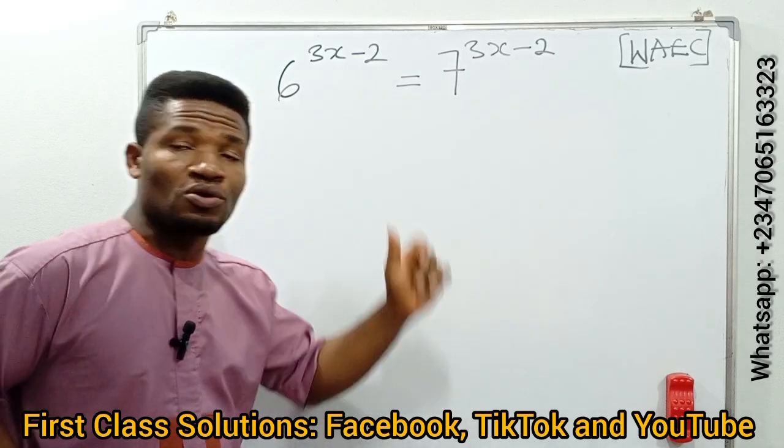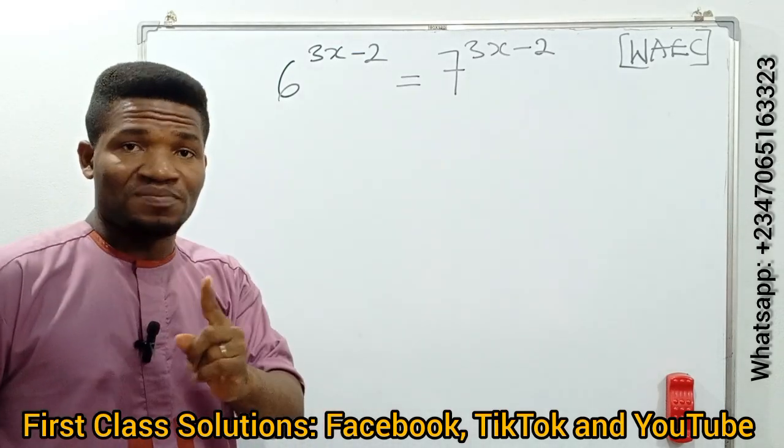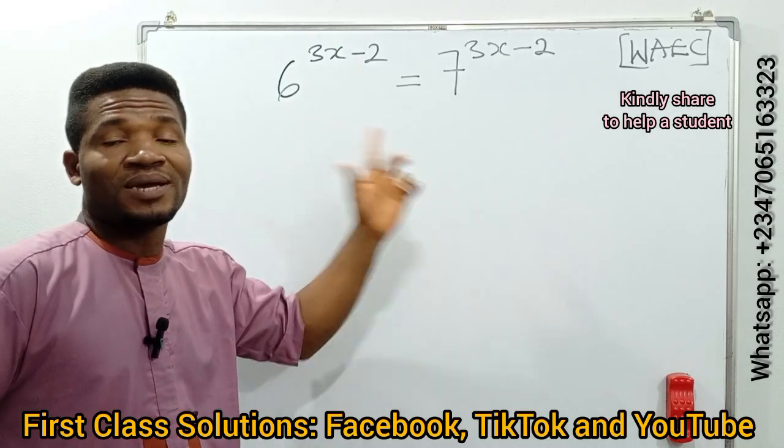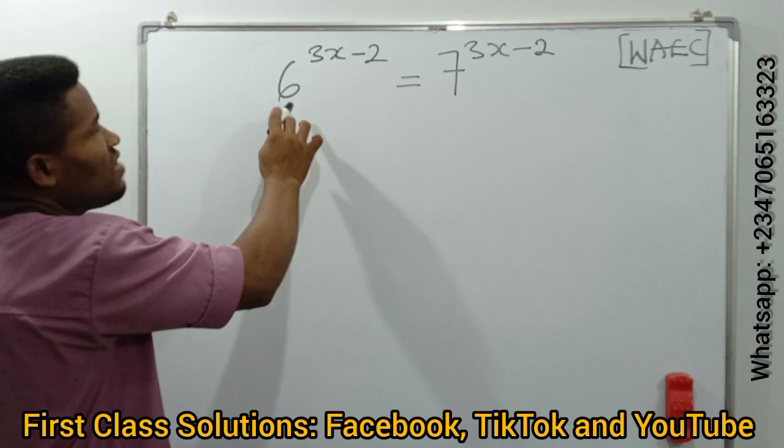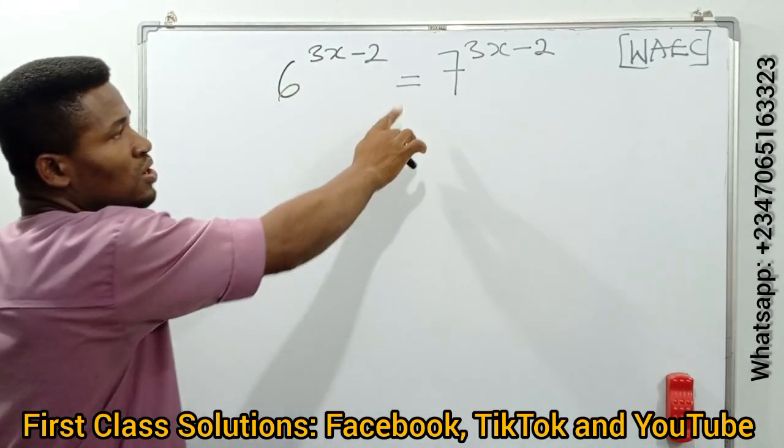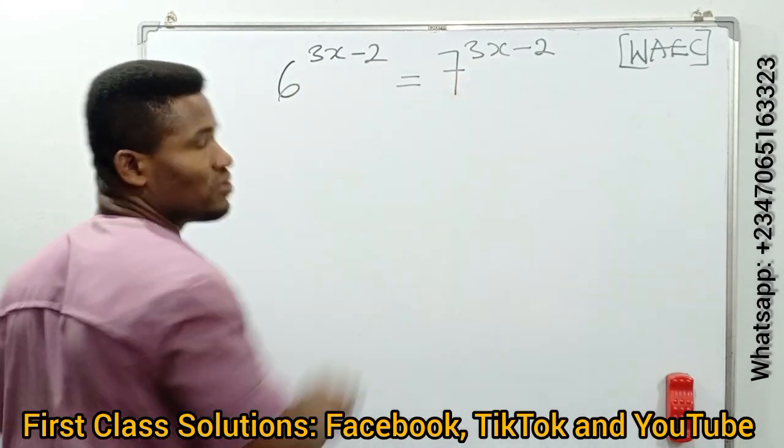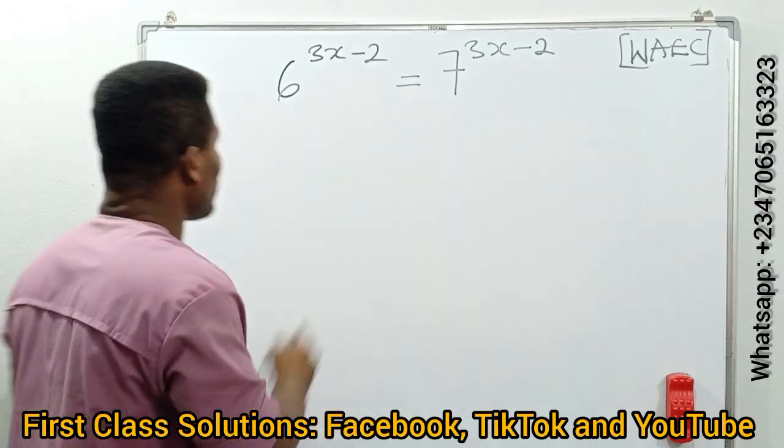In whatsoever you do, if you come across this kind of question in an exam, do not skip it. It's very simple. We're going to solve it and I'll see how simple it is. They ask us to find x if 6^(3x-2) = 7^(3x-2), and they also get the value of x.